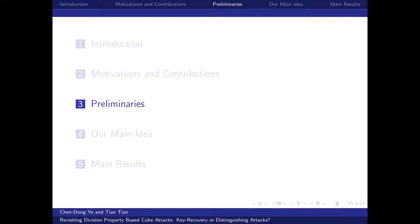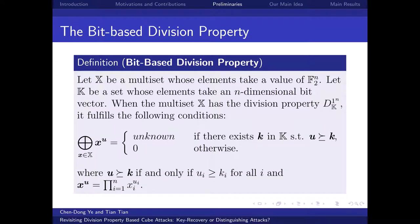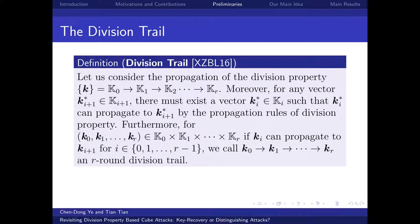Before illustrating our work in detail, we introduce some preliminaries. The division property is defined on a multiset whose elements take values of n-dimensional binary vectors. When the multiset X has the division property D^K_{U_1,...,U_N}, it fulfills certain conditions, dividing the n-dimensional vectors into two parts according to the multiset. Considering the propagation of division property, Xiang and other researchers proposed the concept of the division trail. With this concept, one can calculate the division property of the output set iteratively.